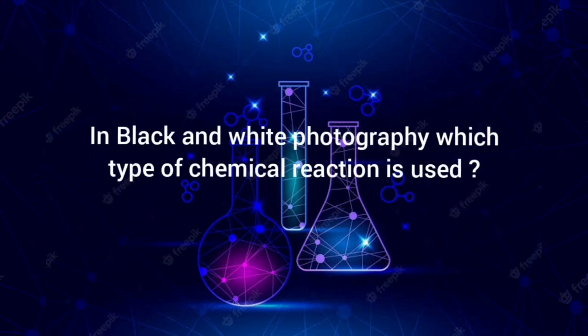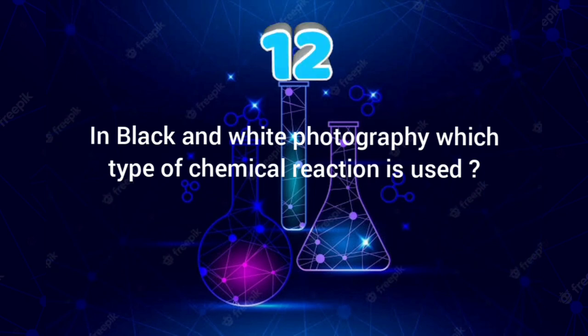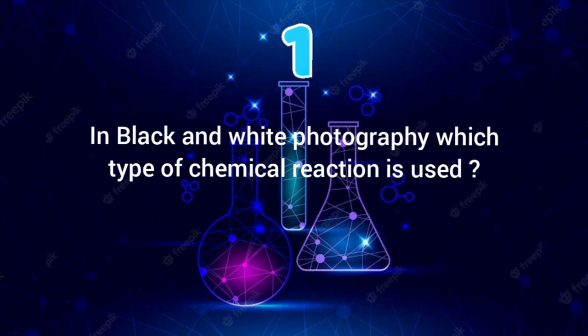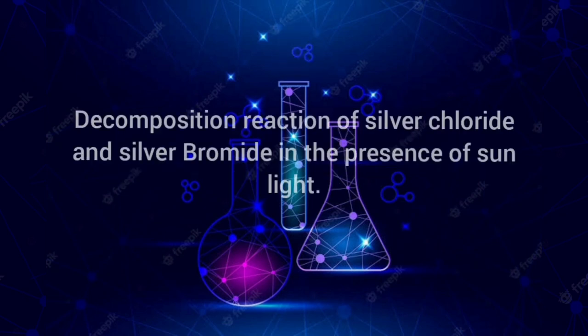Eighth question: In black and white photography, which type of chemical reaction is used? Its correct answer is: decomposition reaction of silver chloride and silver bromide in the presence of sunlight.